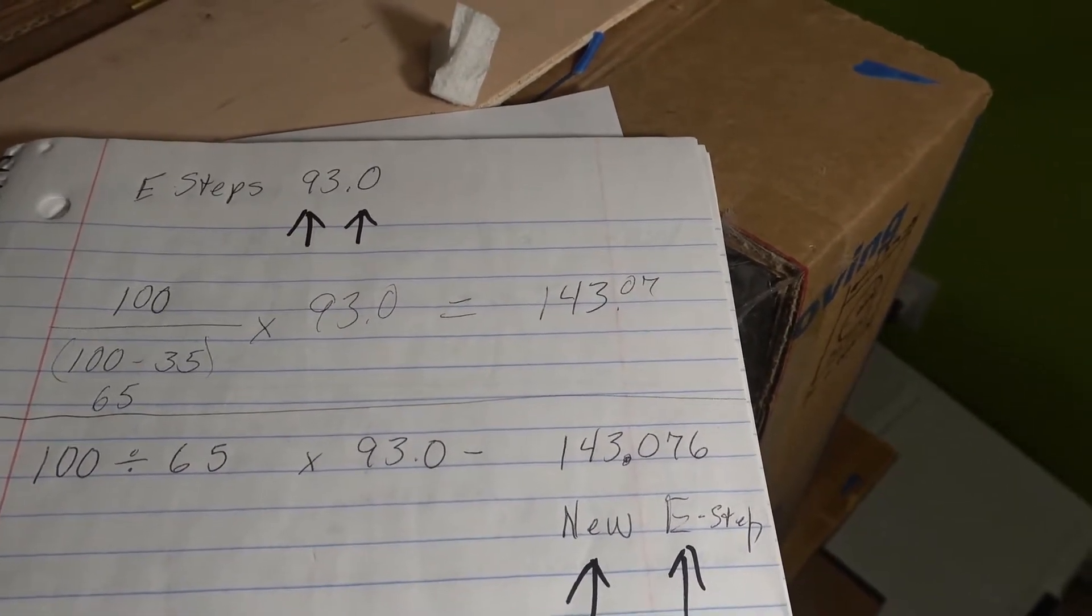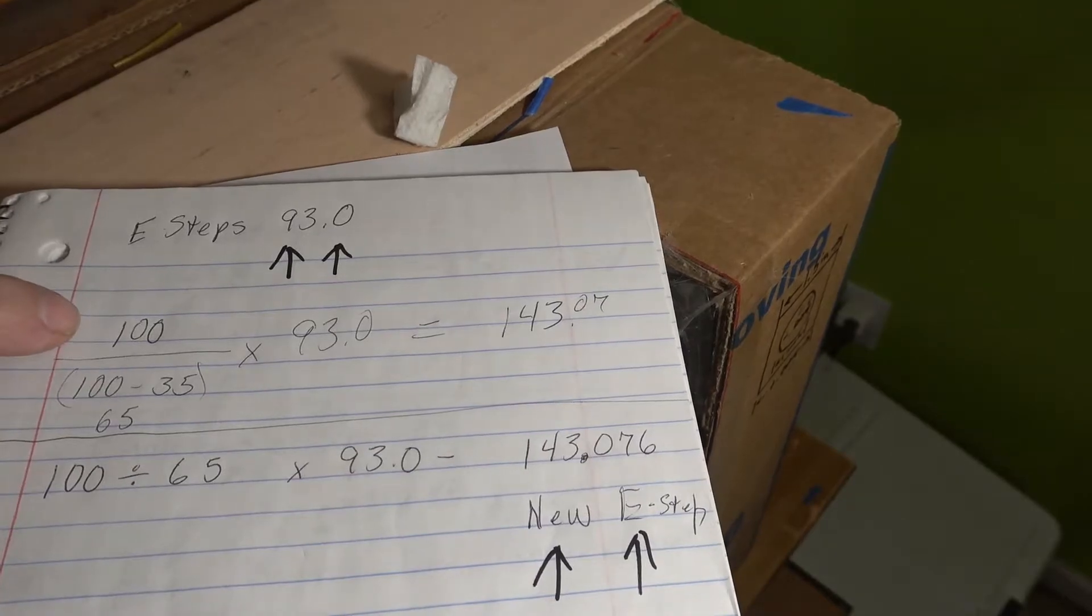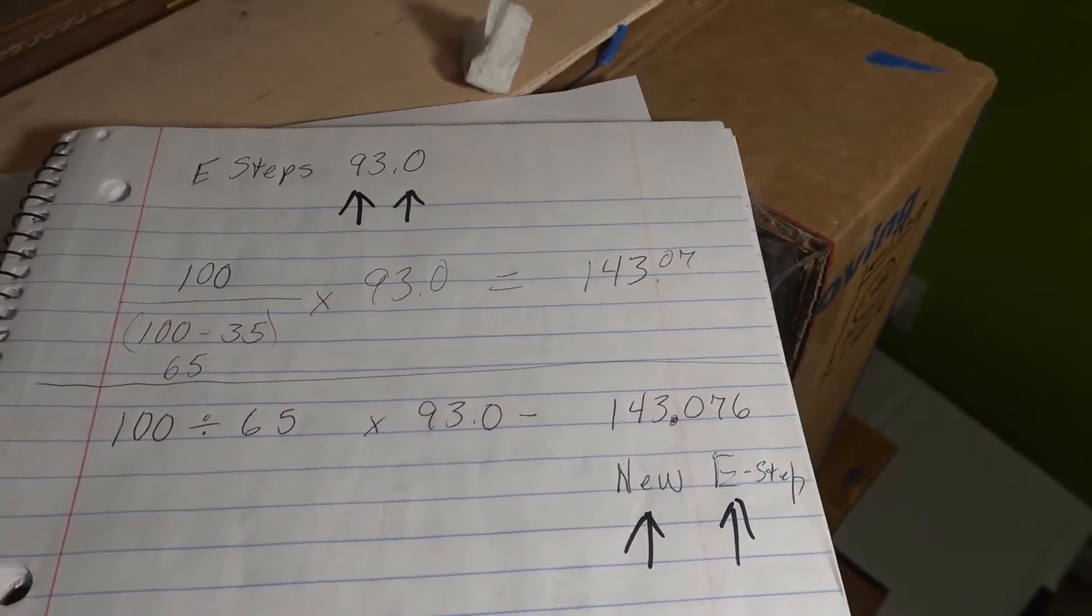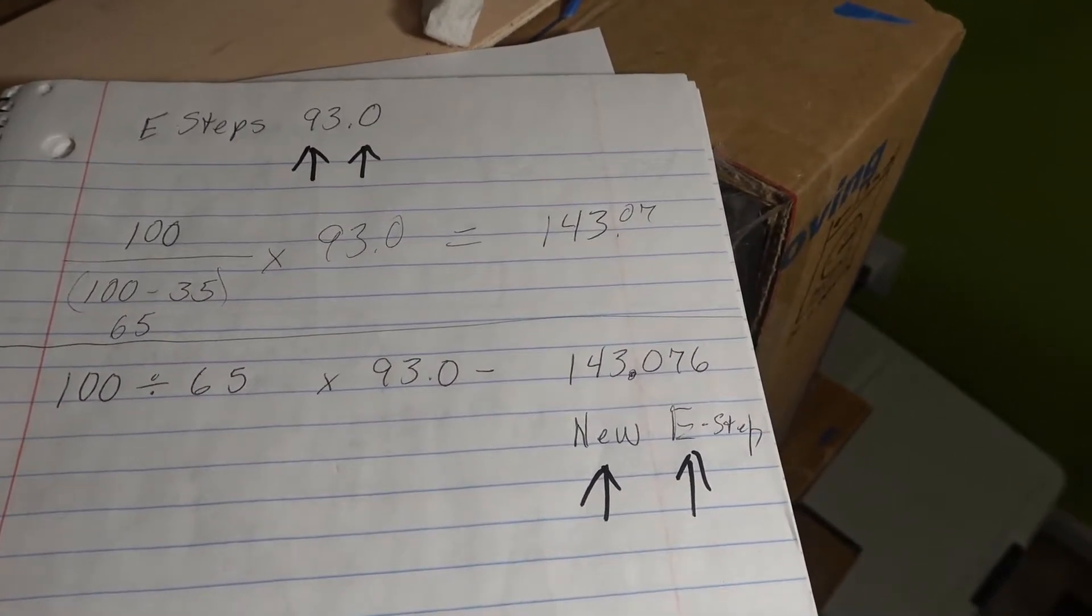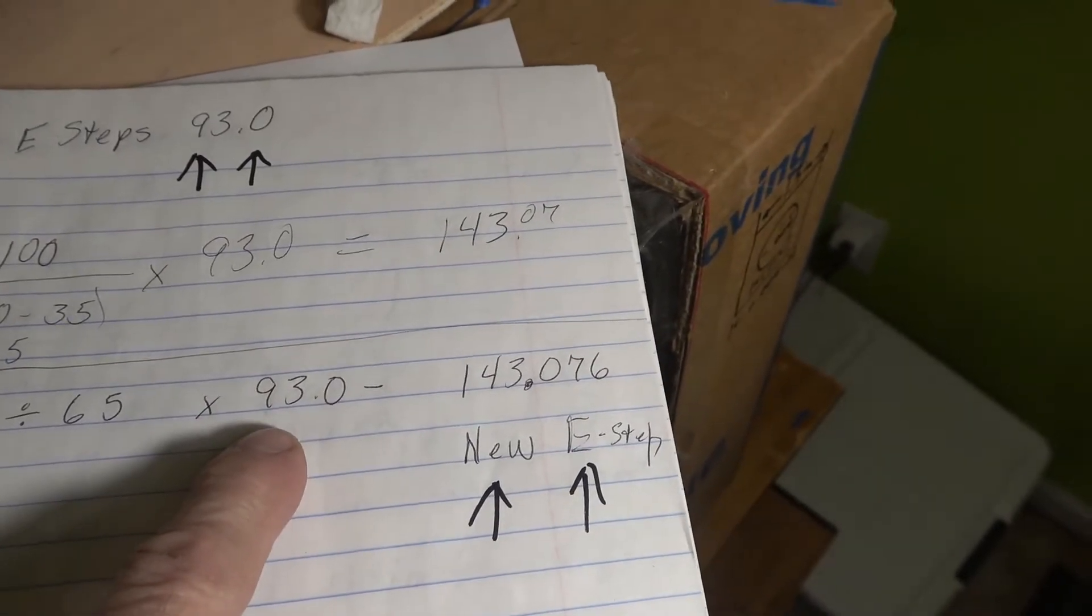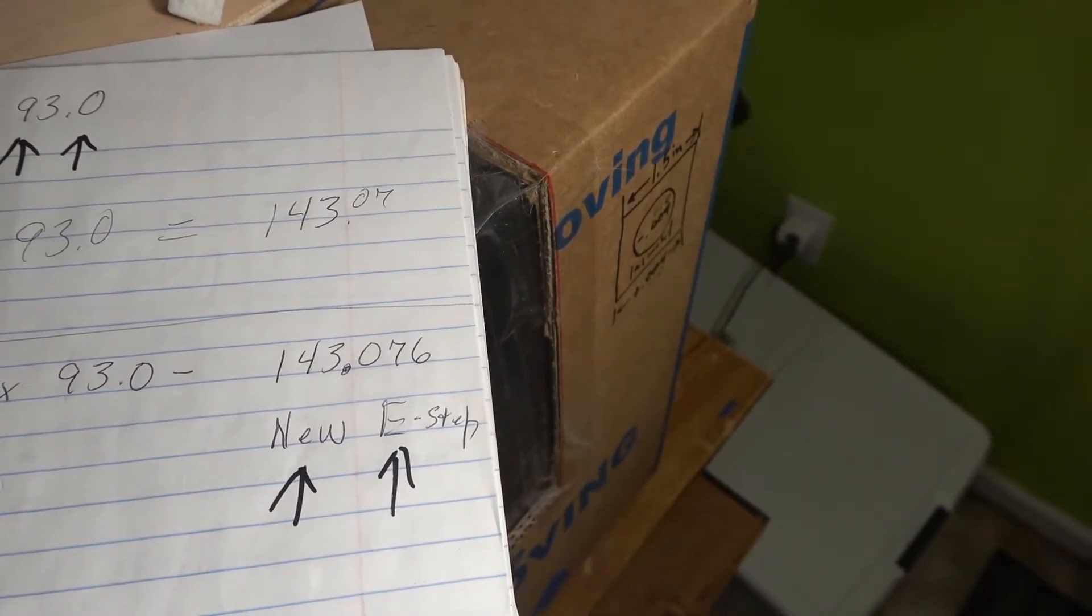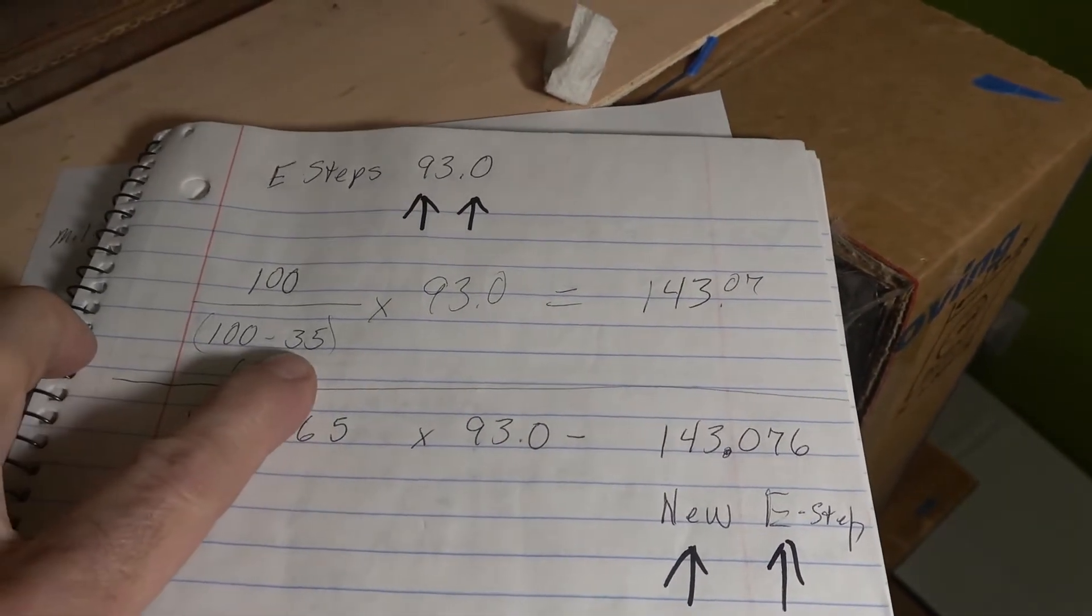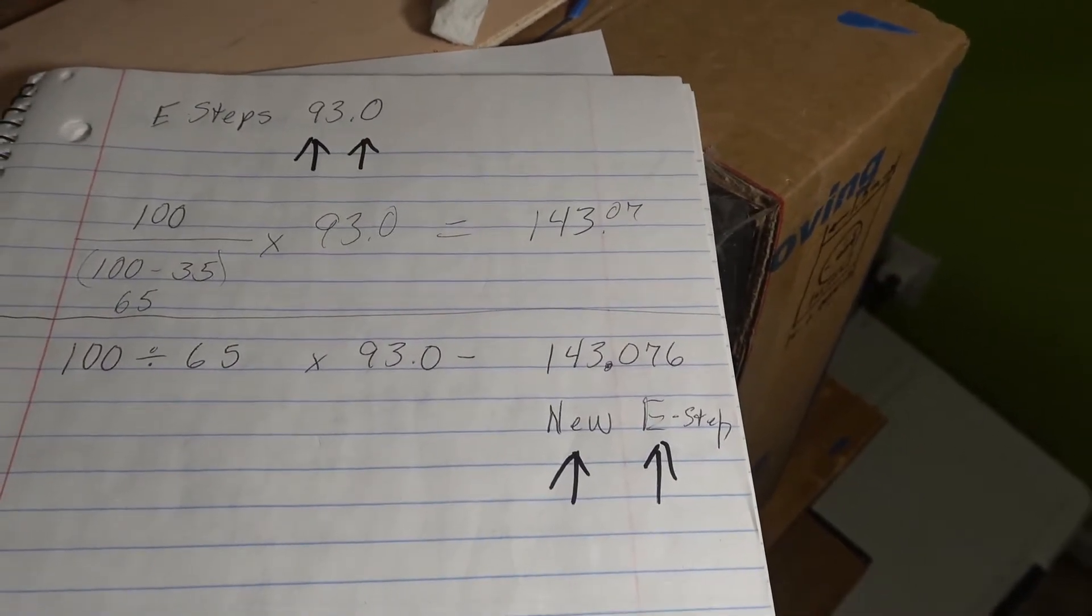I am probably not the guy to be explaining math to anybody, but this is where the e-step started at, and this is the 100 millimeters you were trying to get. It came up 35 millimeters short. So you subtract the 35 from 100, you got 100 over 65. This is the math you have to do. You take that times the original 93, and that equals your new e-steps. Set it to that, try again, see how much you're off. And if you're off by anything, that's where the number that you're off by goes into your equation. And this worked out perfect for me.